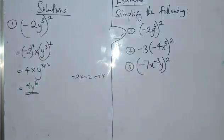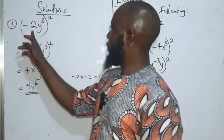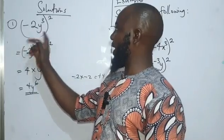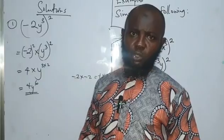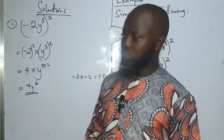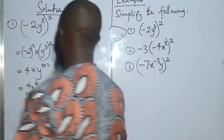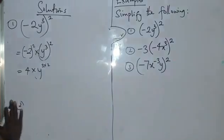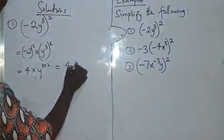You can see it is very simple, but if care is not taken you might forget to square the -2 coefficient and only multiply the powers on y. You might write -2y⁶ as the answer, which is wrong. So that is why you need to pay close attention to details here.